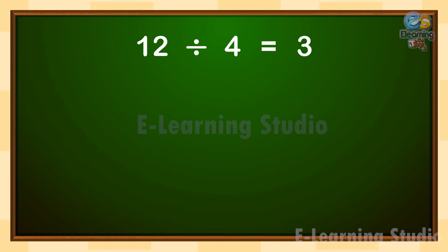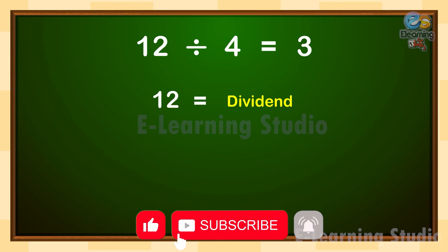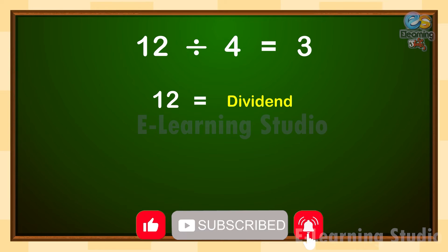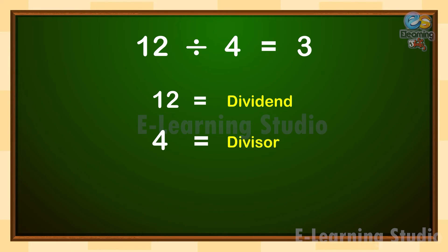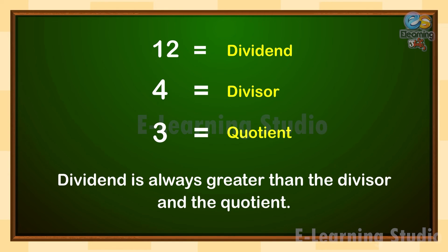Here, 12 is the dividend — the number that gets divided. 4 is the divisor — the number that divides. 3 is the quotient — the answer in division. Remember, the dividend is always greater than the divisor and the quotient.